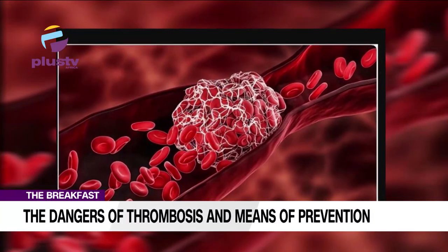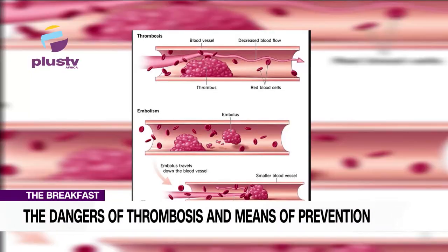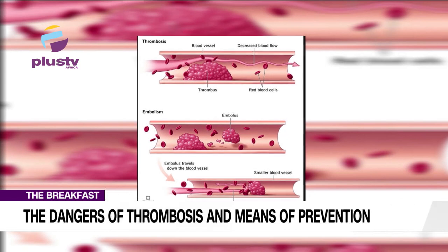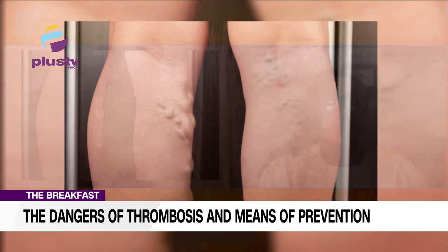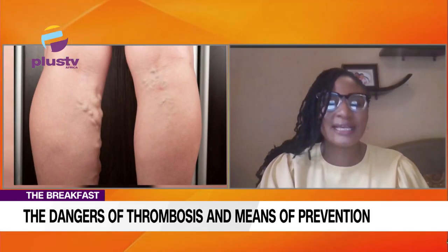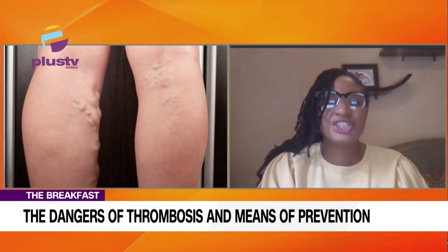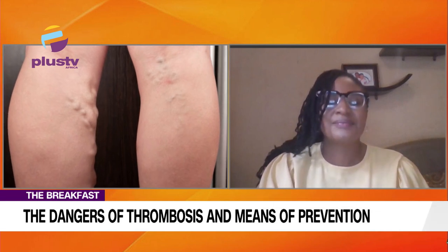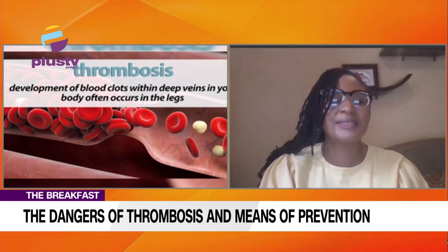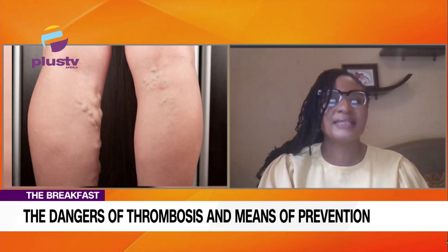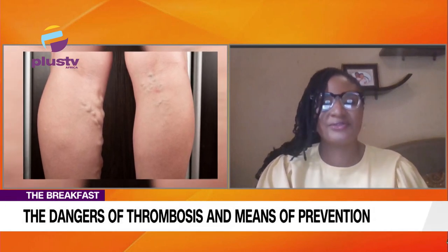Thrombosis is a word that describes inappropriate clot formation within the vessel. The vessel can be the artery, it can be the vein. When clot forms, when blood comes together in clumps, congeals within the vessel — that can be used to describe what thrombosis is. So thrombosis is a term used to describe inappropriate clot formation, be it in the vessel, in the artery or in the vein.